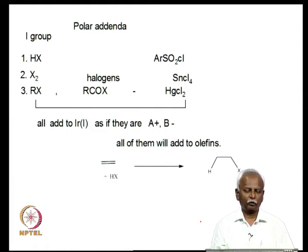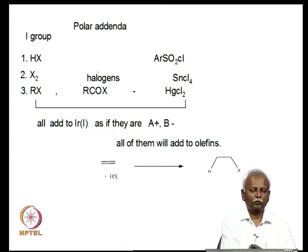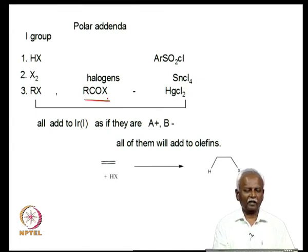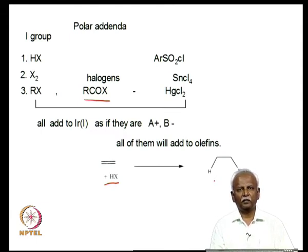We can also have very highly polarized molecules like RSO2Cl, which polarize as RSO2+ and Cl−, and RCOx, which polarizes as RCO+ and X−. Although these molecules look dissimilar, they share a common feature: if you take an organic olefin and add any of these molecules, one part adds to one carbon and the other part attaches to the other carbon — they undergo simple addition reactions to olefins.